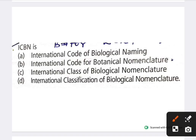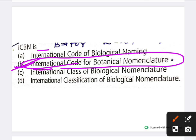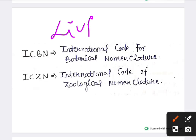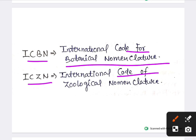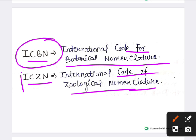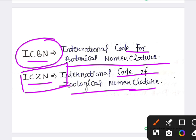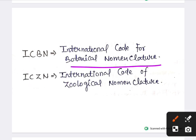Next question: what is the full form of ICBN? The answer is International Code for Botanical Nomenclature — option B. Also remember: ICBN stands for International Code for Botanical Nomenclature, and ICZN stands for International Code of Zoological Nomenclature. Both full forms are important to memorize for the exam.